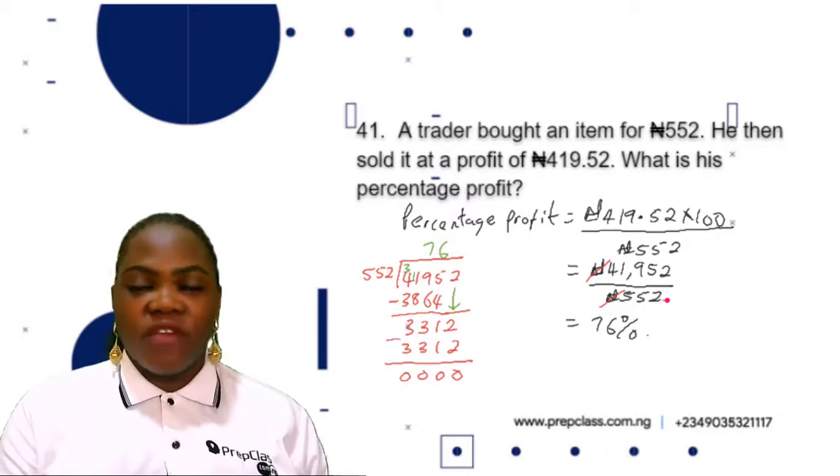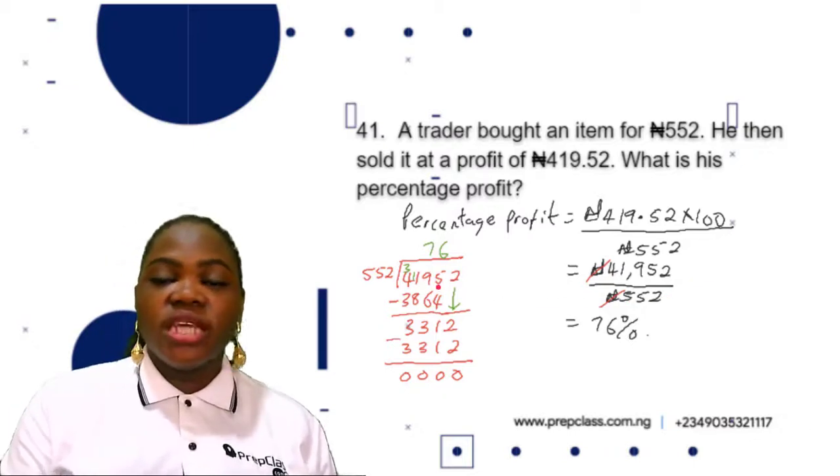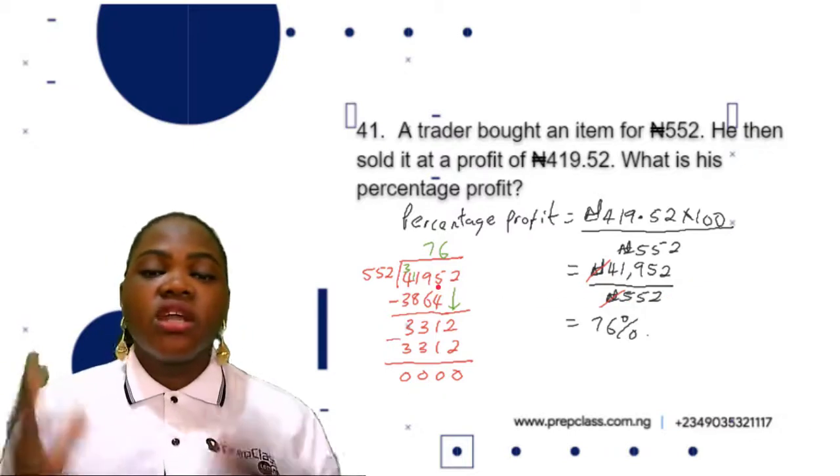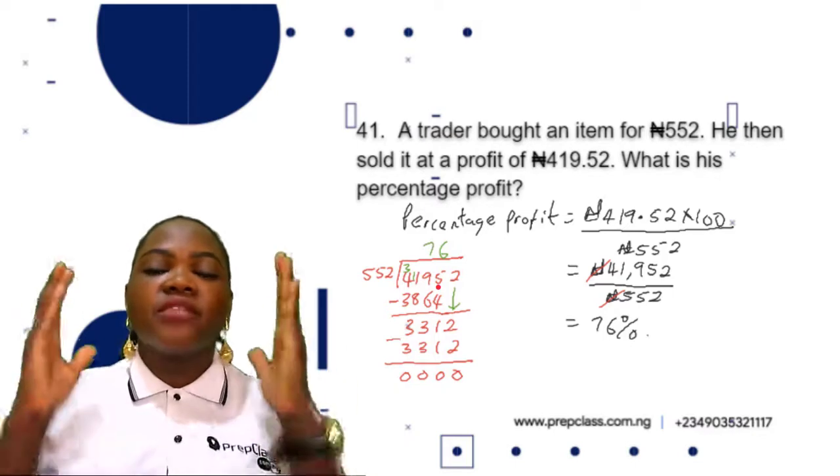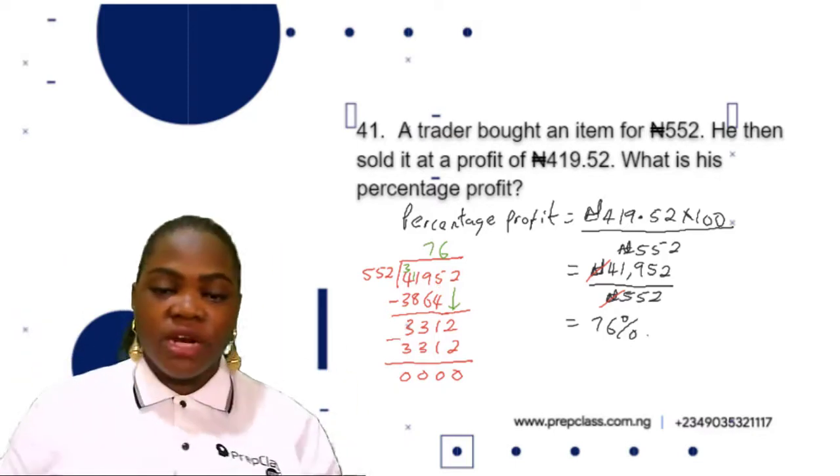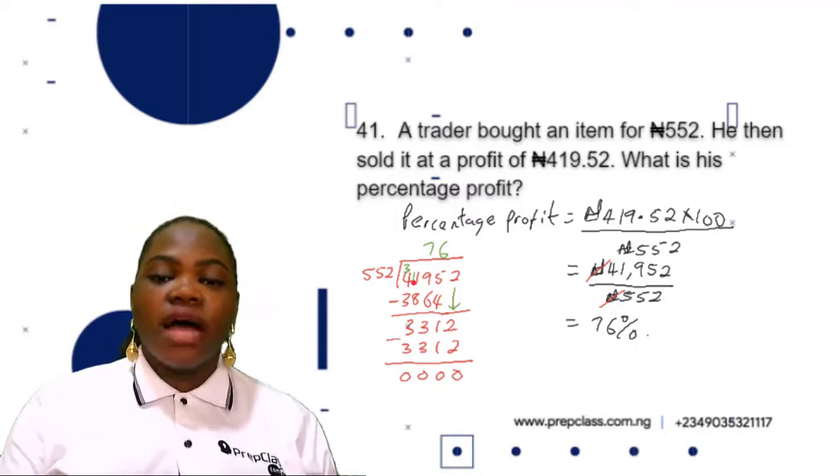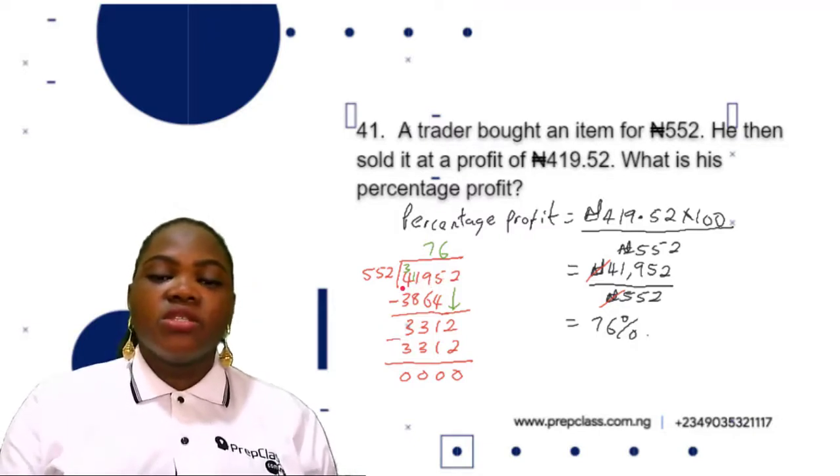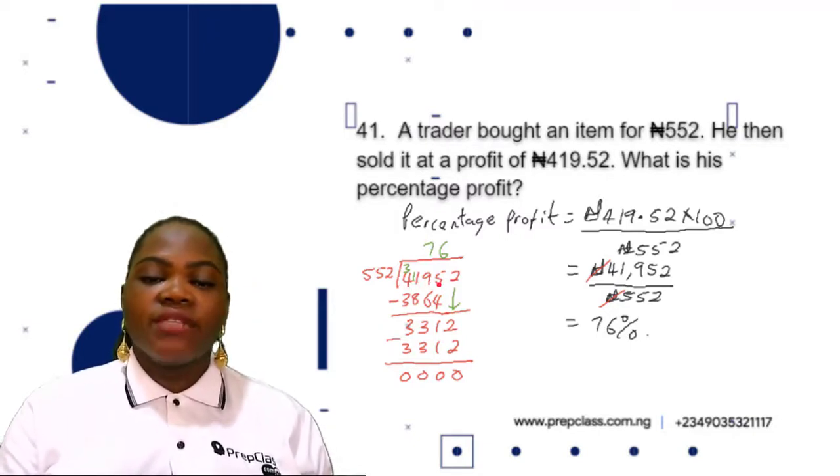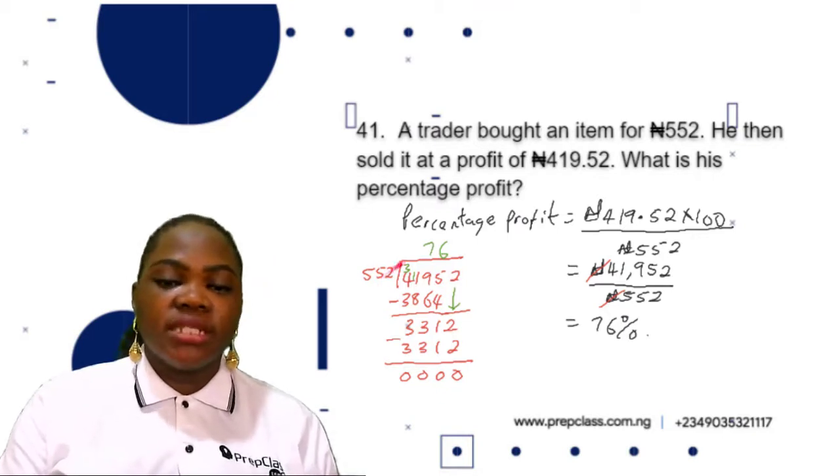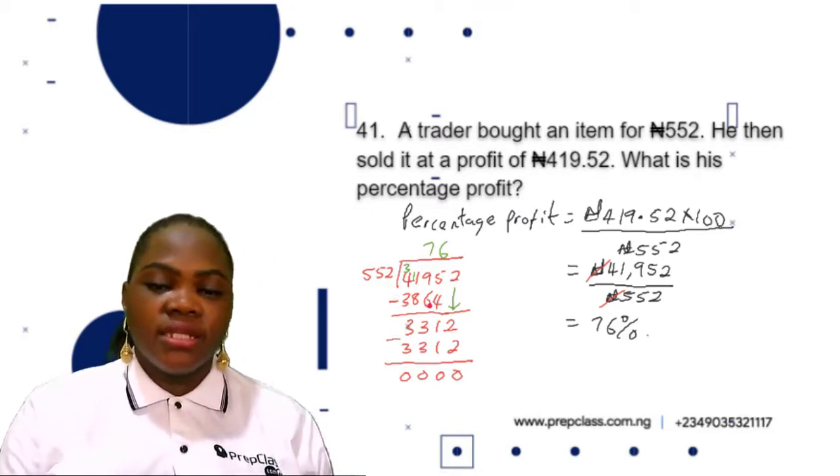Using the long division method, we'll find the first possible digit that is divisible by 552, and that is 4195. So 4195 divided by 552 is 7. 7 times 552 is 3864.